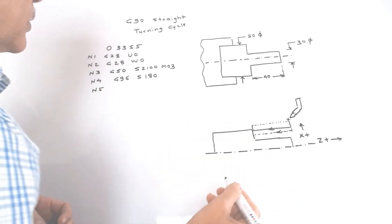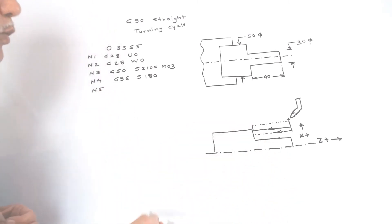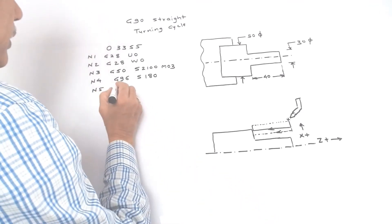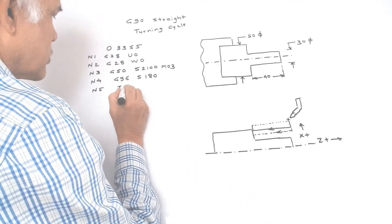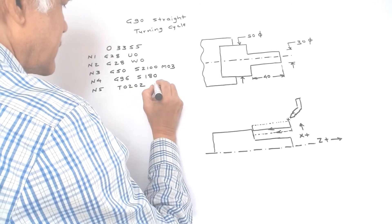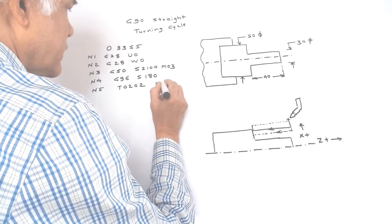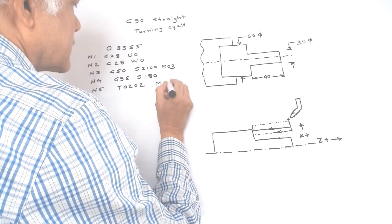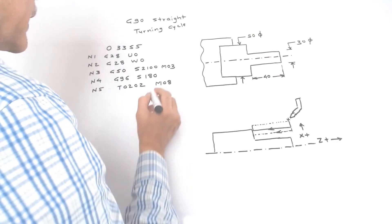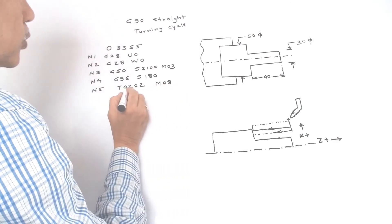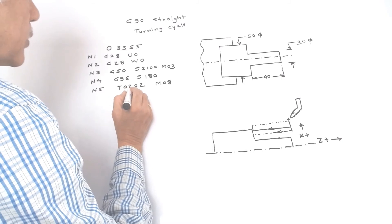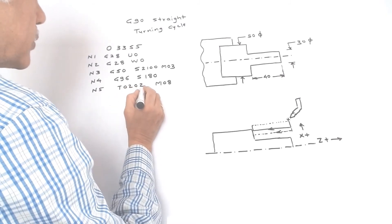Next step is to call the tool. In the turret, different tools are mounted, so we will call tool number 2 with offset number 2. At the same time we will start the coolant motor. M08 is called for starting the coolant motor. T02 means serial number 2 tool with offset number 2.